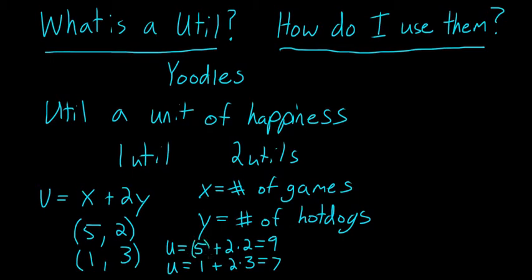Where this five and this one are the x value, and this two or this three are the y value. And so, here I can see that I would rather have five games and two hot dogs.